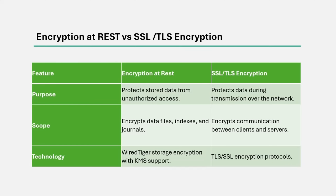What is the difference between encryption at rest and SSL/TLS encryption? Encryption at rest is used to protect stored data from unauthorized access, whereas TLS/SSL encryption protects data during transmission over the network. Encryption at rest encrypts data files, indexes, and journals, while SSL/TLS encrypts communication between the client and the server. For encryption at rest, we use WiredTiger storage encryption with KMS support, and for SSL/TLS we use the SSL/TLS encryption protocol.